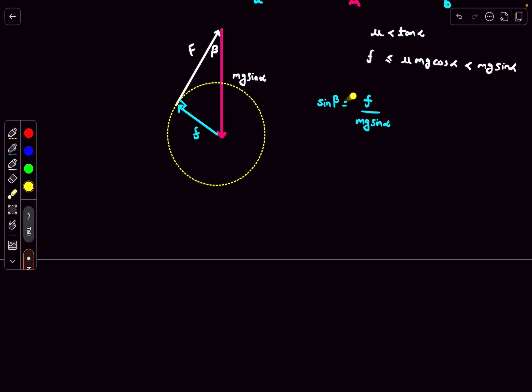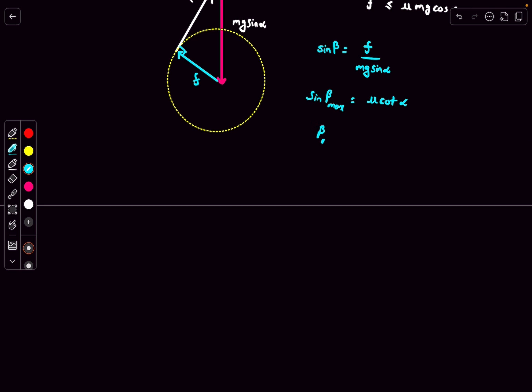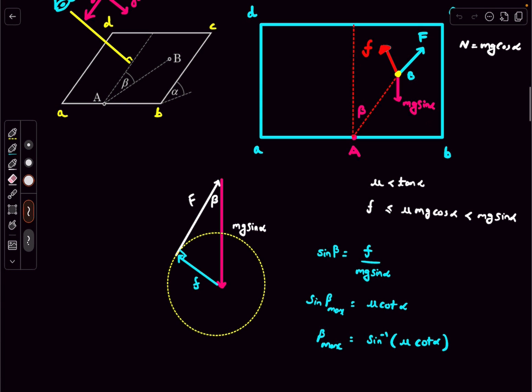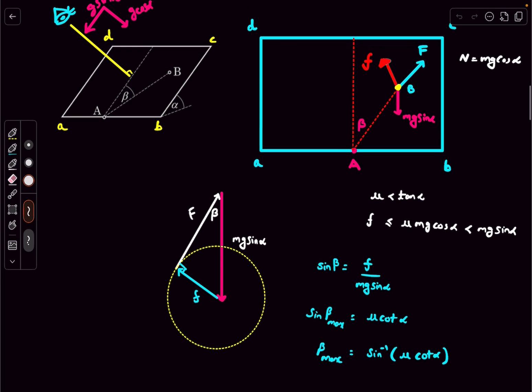Now, if we look at this relation, what we are seeing is that beta is directly proportional to the force of friction. In terms of magnitude, beta will be maximum when f attains its maximum value, and the maximum value of f is going to be mu mg cos alpha. So sine of beta max is going to be mu times cot of alpha. From here, beta max turns out to be sine inverse of mu cot alpha. That's about it, that would be the answer to this question. If you enjoyed the video, make sure to like, share, and subscribe. Thanks for watching.